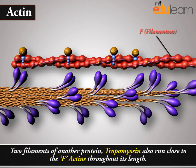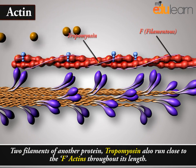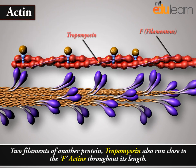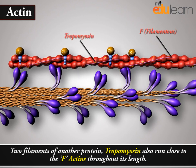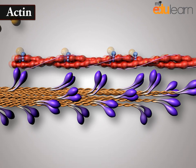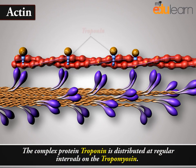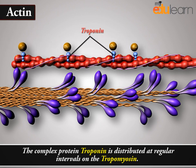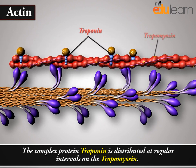The two filaments of another protein, tropomyosin, also run close to the F-actins throughout its length. The complex protein troponin is distributed at regular intervals on the tropomyosin.